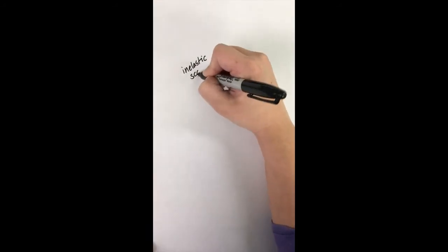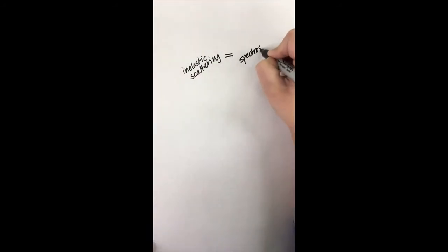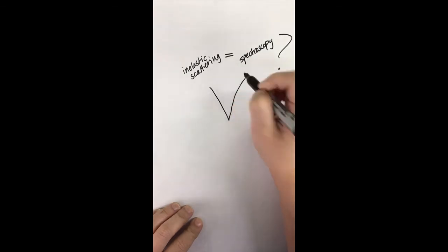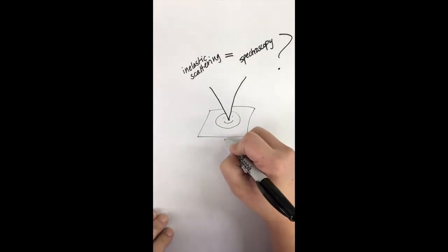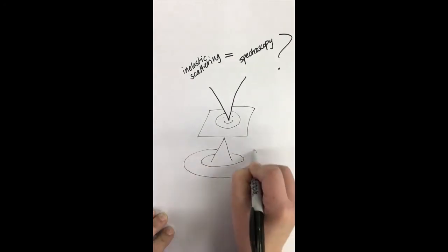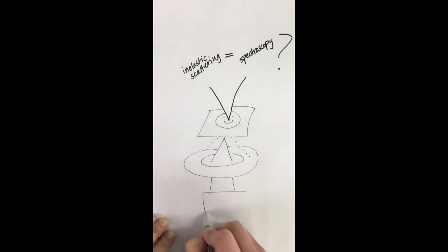So how do we turn inelastic scattering into useful information to be used for spectroscopy? Well, when the electron beam hits and exits the sample, these electrons can then be funneled into a special electron spectrometer that spreads them based on energy. This can then be funneled into a detector, and this detector produces a spectrum based on the energy differences in the electron.